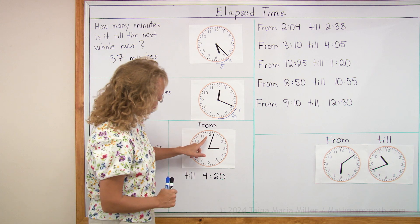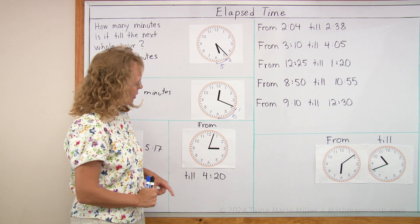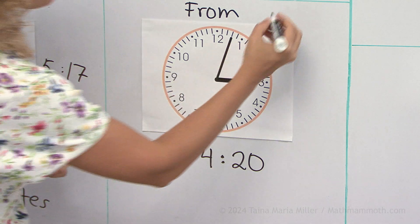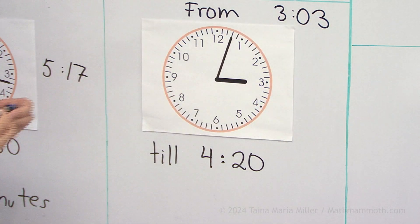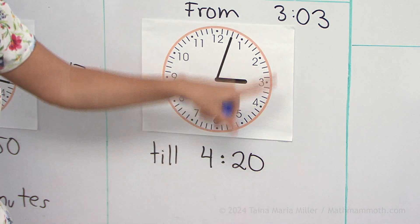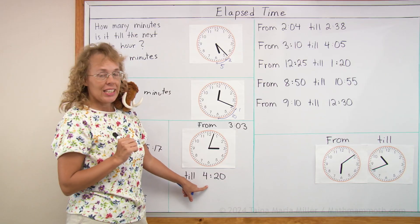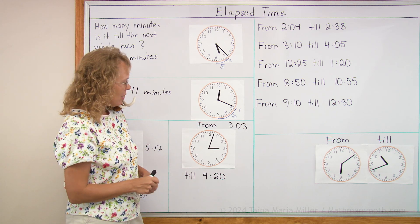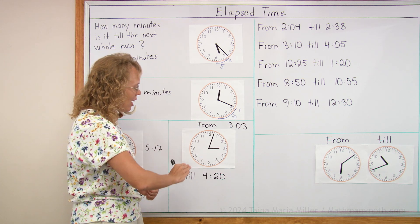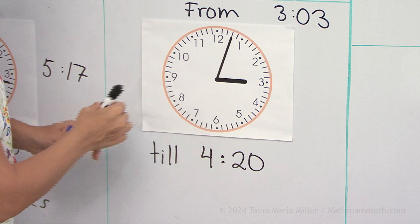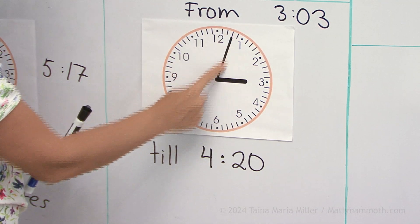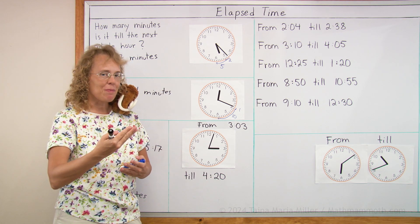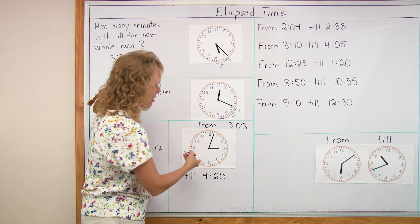Next one: from this time till 4.20. This time here is 3.03. Until 4.20 — notice that the hour changes now, from three hours to four hours. There is more than one hour between these two times, because if there was exactly one hour, we would have 4.03. So it is one hour and some more. If we go exactly one hour, we have 4.03, and then we go from 3 minutes till 20 minutes. You can subtract 20 minus 3, which is 17. So it would be 1 hour and 17 minutes.